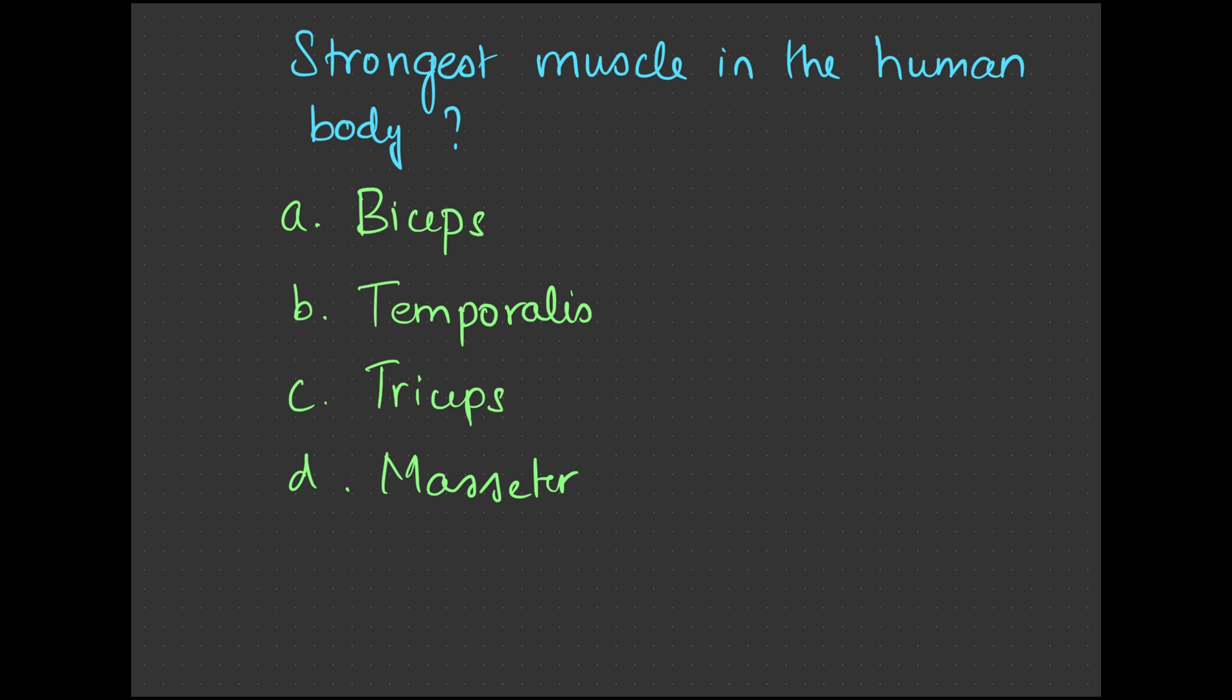There are so many muscles in the body. Those who go to the gym will know biceps and triceps. And we saw something about temporalis and masseter. Which is the strongest muscle in the human body? It is the masseter.